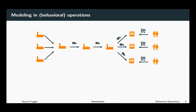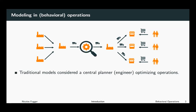Operations is about optimizing the production process. Traditional models considered a central planner optimizing operations. This was very much an engineer's perspective — thinking about the production process: how can I improve the performance of the machines involved? How can I have an optimal queuing behavior? How is the optimal order of production? What is the optimal lot size?